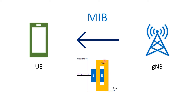The MIB includes the frame number, the subcarrier spacing, and SIB1 information. SIB1 is the next resource that the gNodeB sends to the UE. That information is also included in the MIB, along with the DMRS info — demodulation reference signals info — and whether reselection is allowed or not, and also whether the cell is barred for access or not.